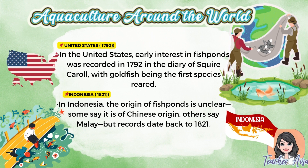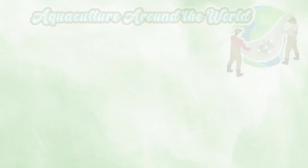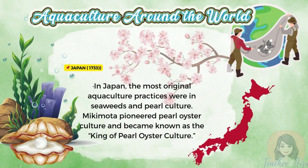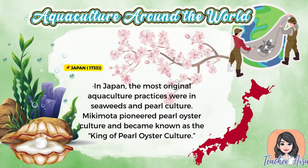Finally, in Japan, aquaculture took a unique form. Instead of focusing only on fish, they cultivated seaweeds and pearls. Mikimoto, known as the King of Pearl Oyster Culture, pioneered pearl oyster farming and changed aquaculture forever. From one nation to another, aquaculture grew in different ways but with one common goal: to provide food, livelihood, and innovation for generations to come.